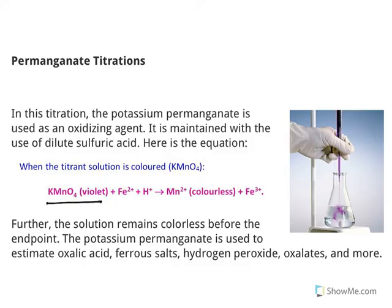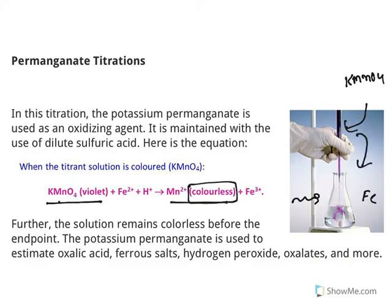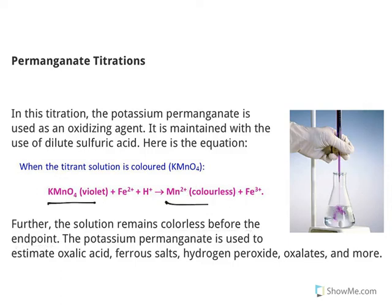One major advantage of permanganate titrations is that potassium permanganate initially has a violet color. As the titration proceeds and permanganate is consumed it becomes colorless. When excess potassium permanganate is added it gives a pale pink color, which indicates the end point. The solution remains colorless before the endpoint because Mn²⁺ is colorless. The moment you add excess KMnO₄ the pale pink color appears. This makes potassium permanganate a self-indicator — no external indicator needs to be added.